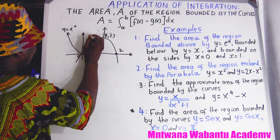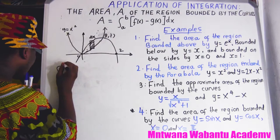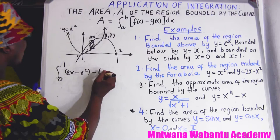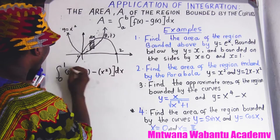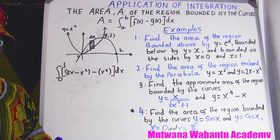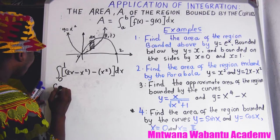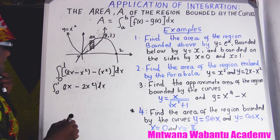So area equals integral from zero to one of the top graph minus the bottom graph dx. The top graph is 2x minus x squared and the bottom is x squared, so it's integral from zero to one of (2x minus x squared minus x squared) dx, which simplifies to integral from zero to one of (2x minus 2x squared) dx.